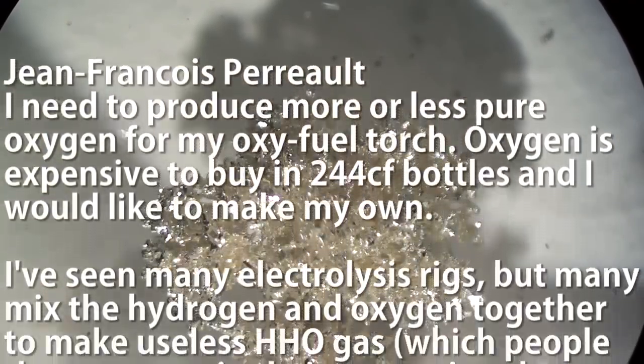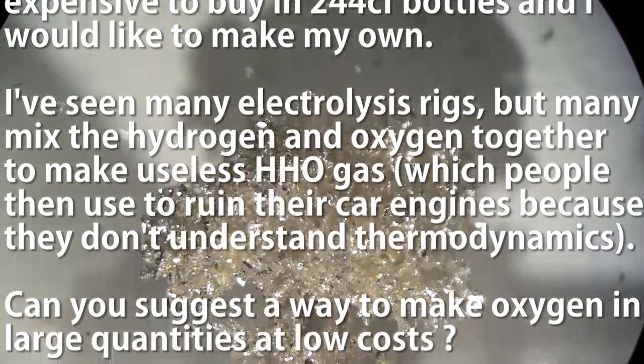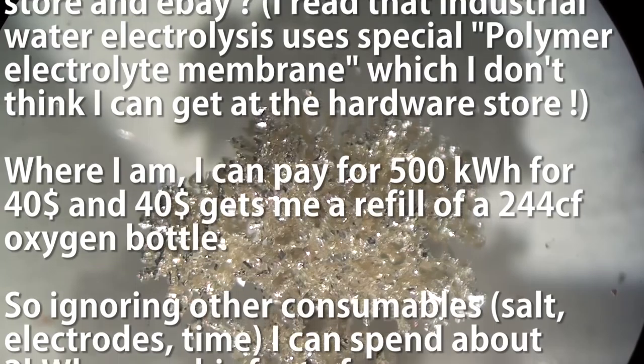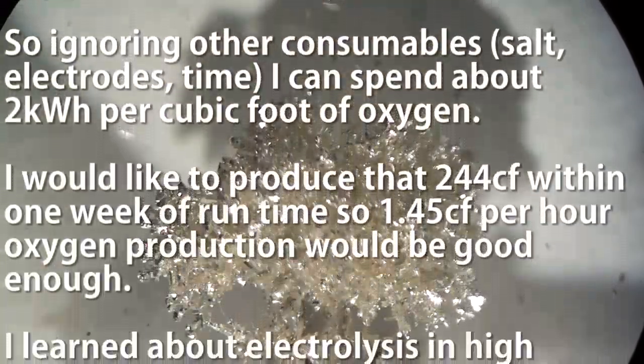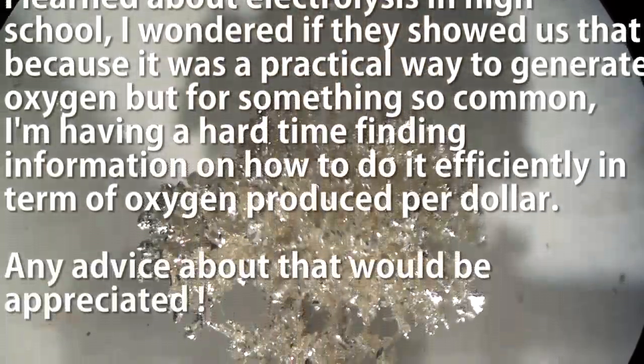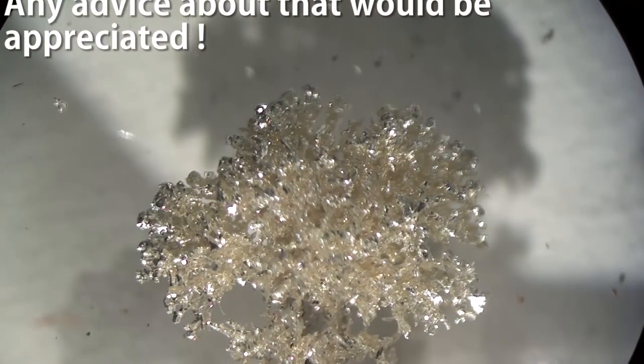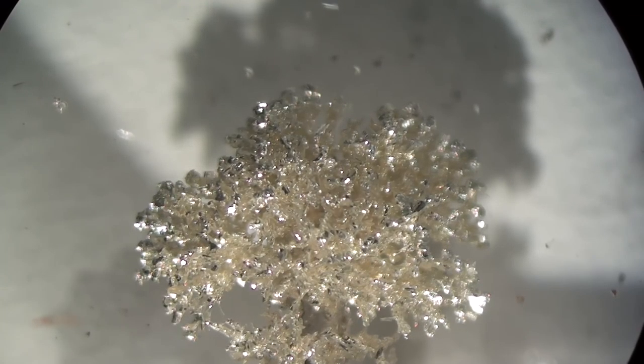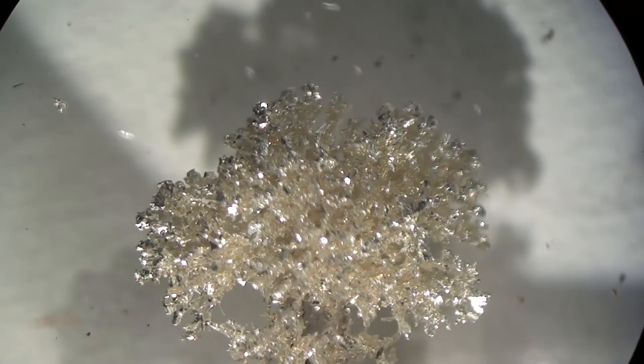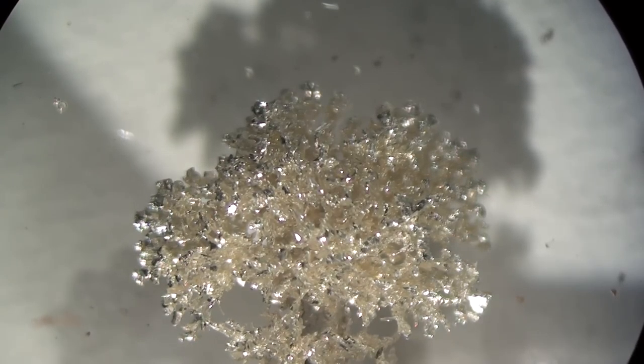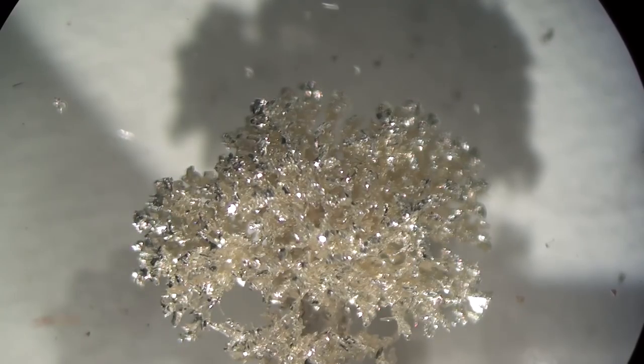Okay, next question. Jean-Francois Periot asks, I need to produce more or less pure oxygen for my oxyfuel torch. Okay, and he describes why he needs it and he suggests using an electrolysis rig. Okay, so you want to make oxygen using electrolysis. Okay, rather than go through all the trouble of electrolyzing it, I think you might be better served getting something called an oxygen concentrator. They use pressure swing absorption technology to separate oxygen and nitrogen from the air to give very high concentrations of oxygen that should be good enough for your welding purposes.